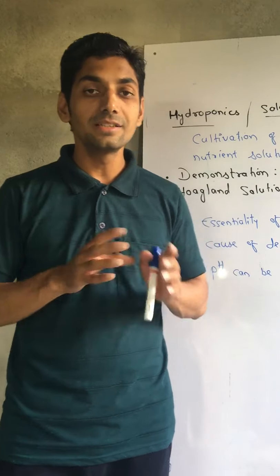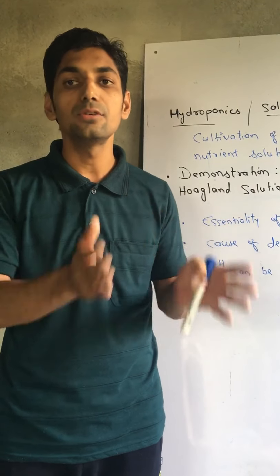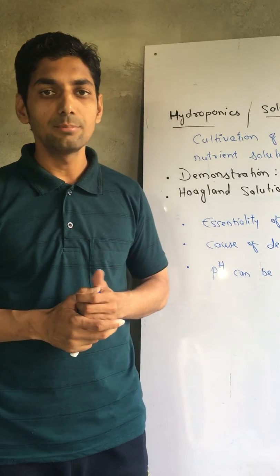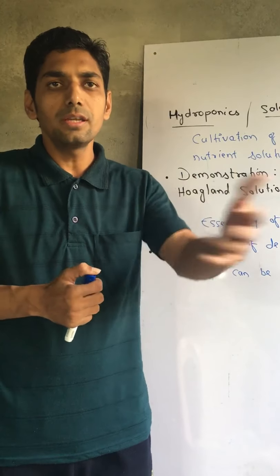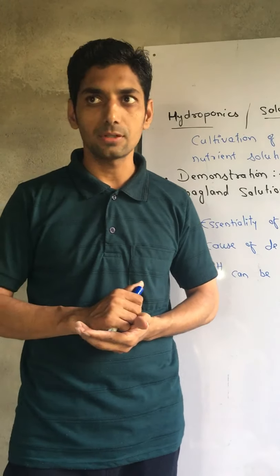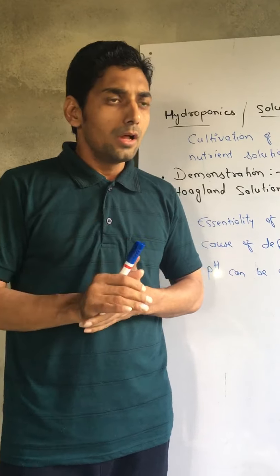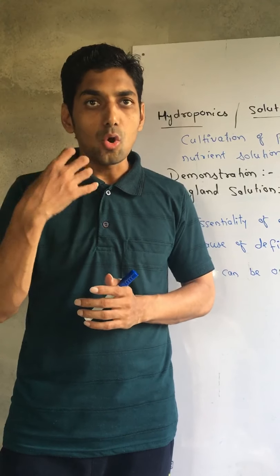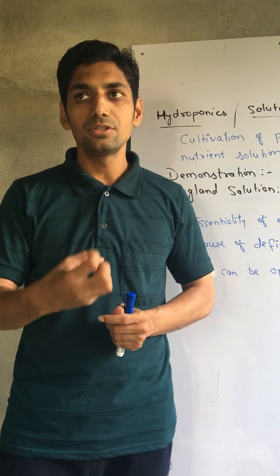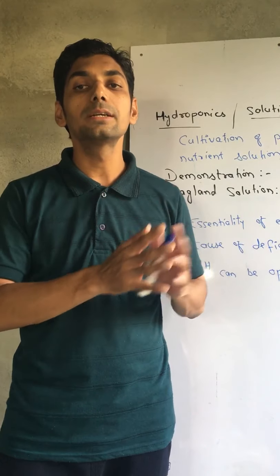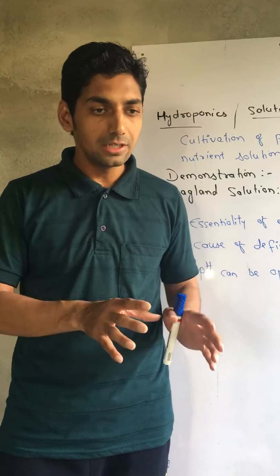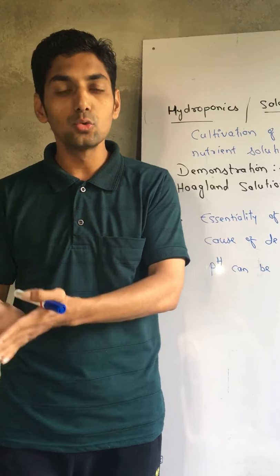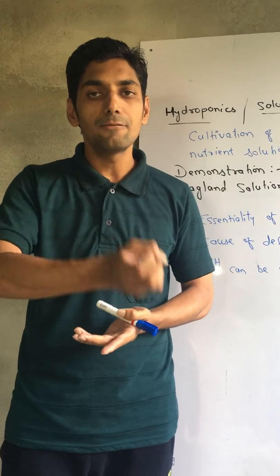There is a group of elements which are responsible for necrosis, chlorosis, and other deficiency symptoms. Now, when we grow plants in soil and we try to identify which element is causing a deficiency symptom, it becomes difficult. Because in the soil there are already many elements available, and plants absorb minerals in ionic form from the soil.